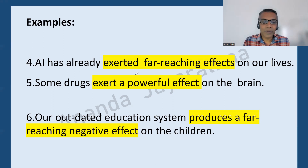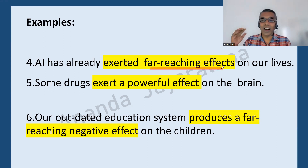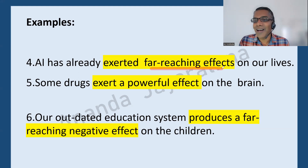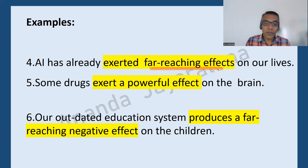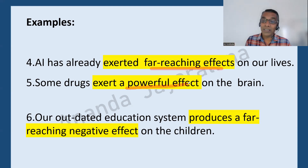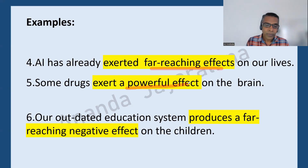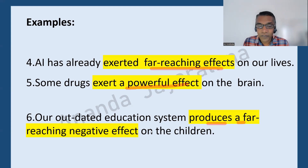Number four: AI has already exerted far-reaching effects on our lives. AI means artificial intelligence. 'Far-reaching effects' is a collocation. Number five: some drugs exert a powerful effect on the brain.